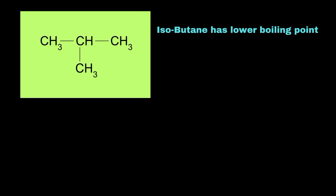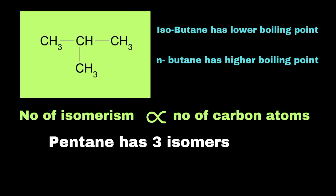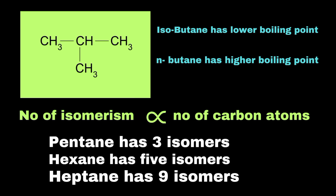In the branched structure of isobutane, three carbon atoms form the main chain and the fourth carbon is attached as a branch to the second carbon. Because of its branched structure, isobutane has a lower boiling point than n-butane since its molecules cannot pack as tightly. As the number of carbon atoms increases, the number of possible isomers also increases — pentane has three, hexane has five, and heptane has nine isomers.